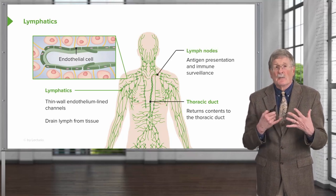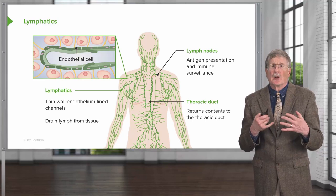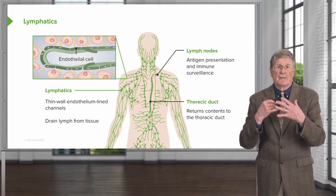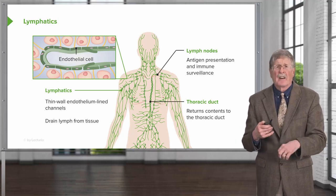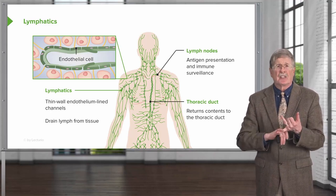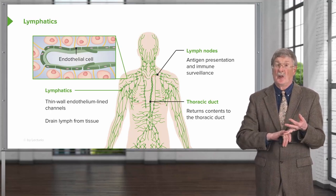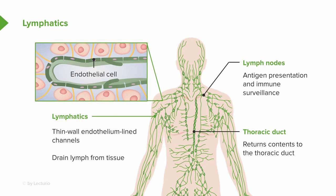The lymph nodes along the way are not just weigh stations — they're very important for antigen presentation and immune surveillance. What's going on in the tissue that's draining that fluid? Is there infection? Is there a tumor? Is there something else going on? The lymph nodes are important elements that allow us to assess what's happening in the tissues.